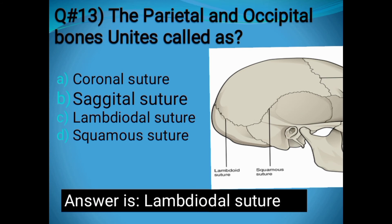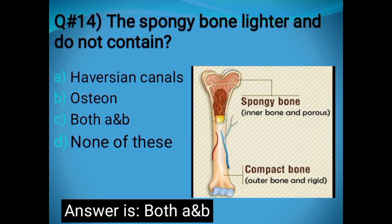The parietal-occipital joint is called the Lambdoidal suture. Question number fourteen: Spongy bone does not contain Haversian canal and osteon — both A and B. The correct answer is both A and B: spongy bone does not contain Haversian canals or osteons.